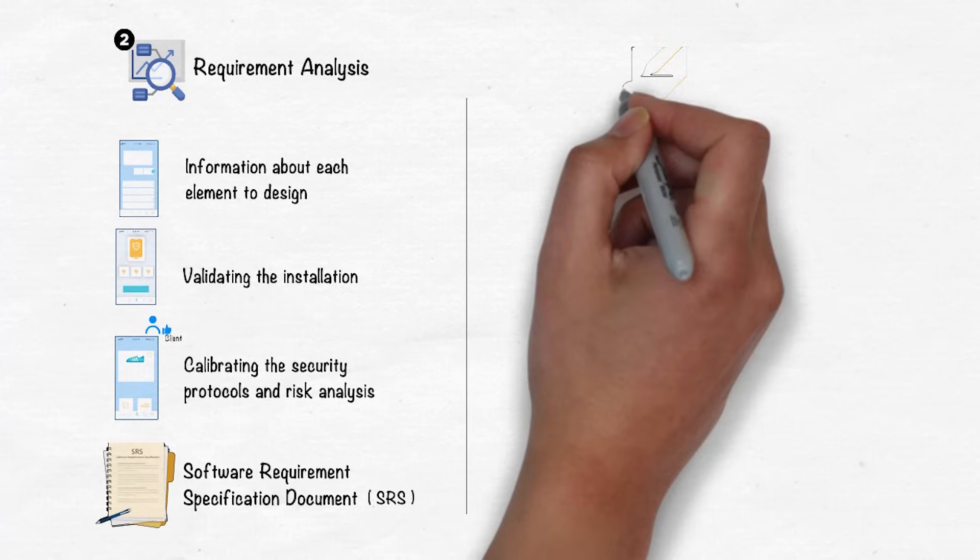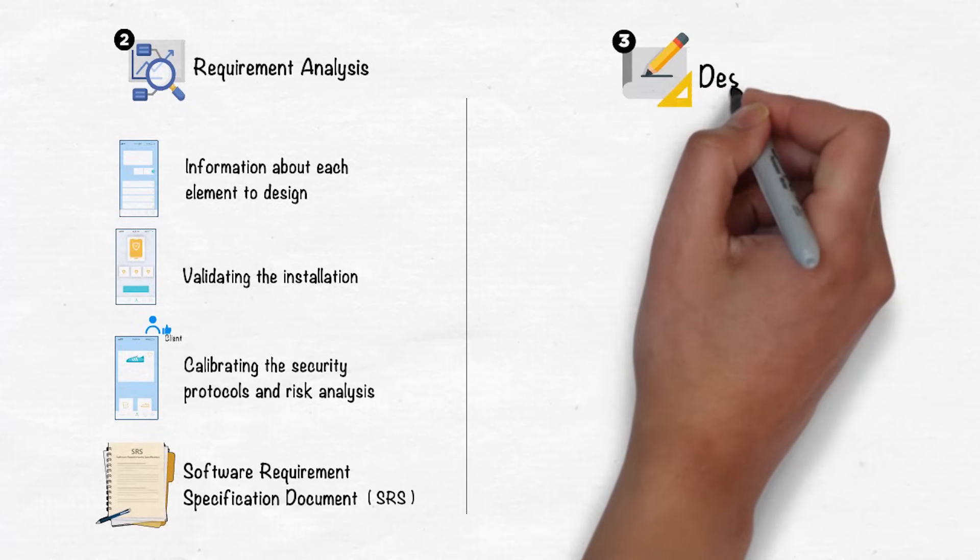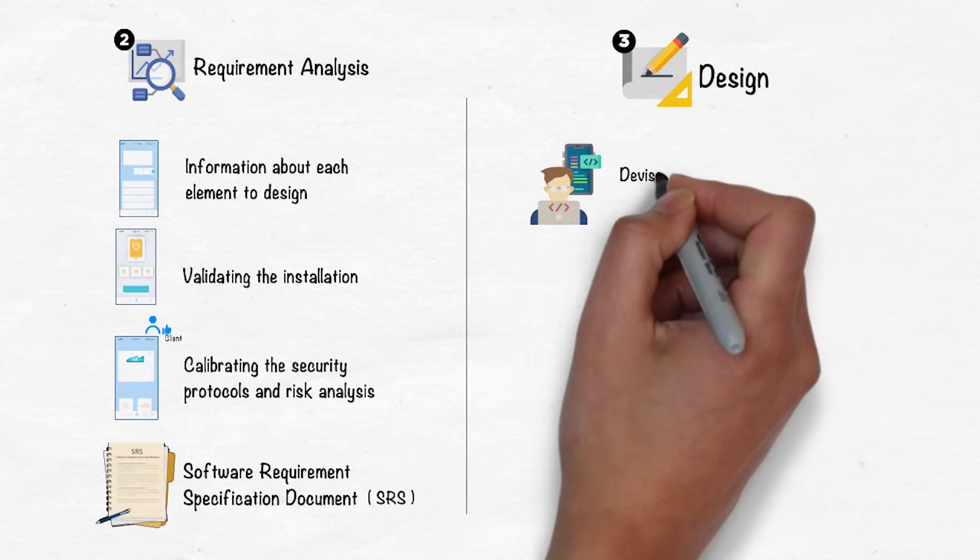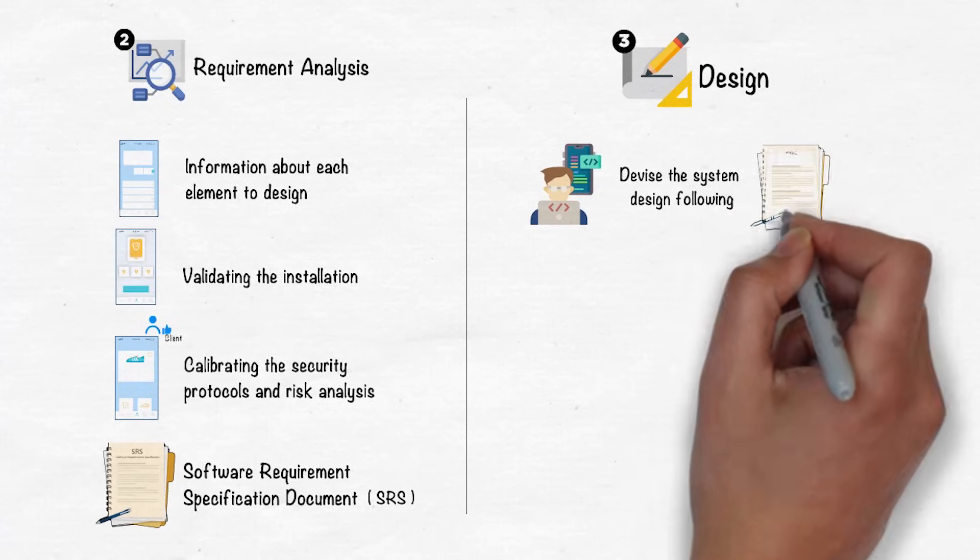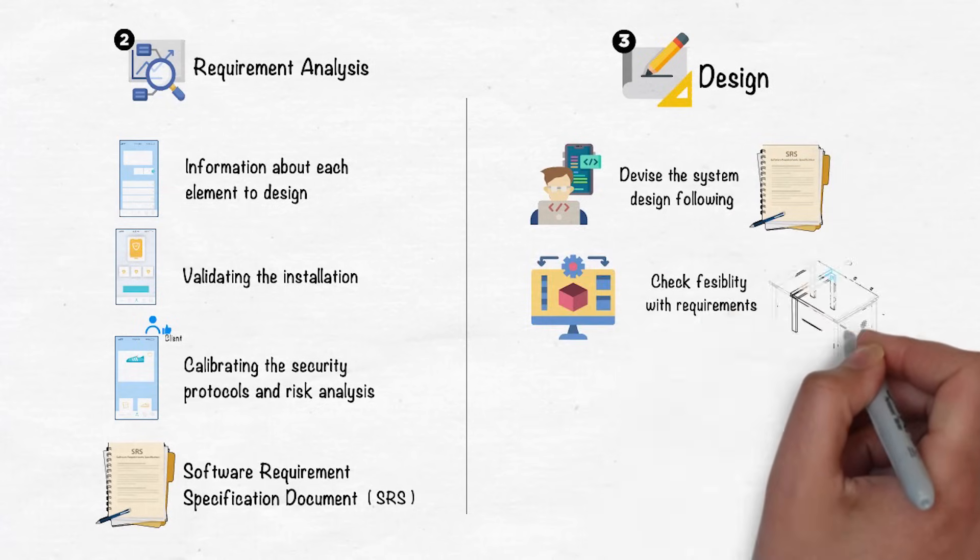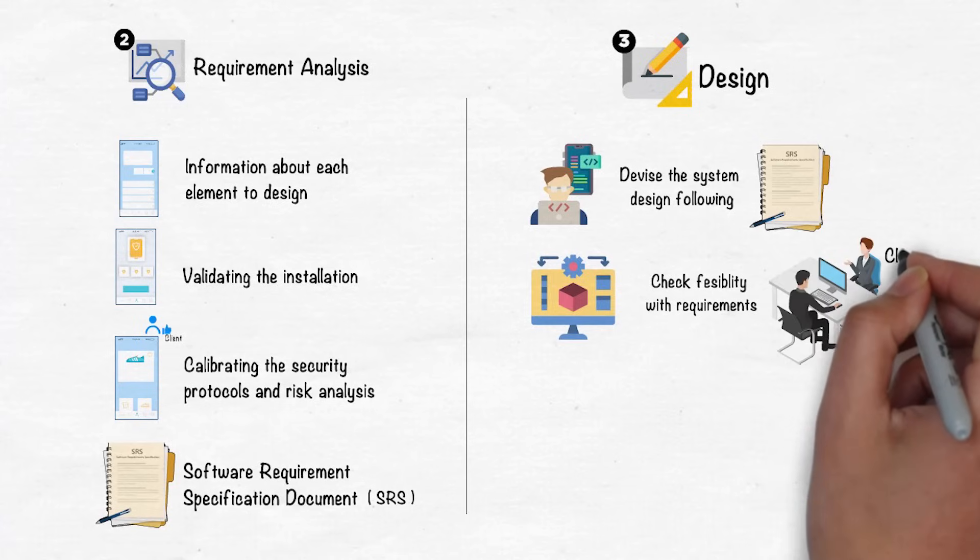After completing the second phase, the third stage of software development is the design phase. The software designers will devise the system design following the SRS document. The system design defines the overall architecture of the software and checks its feasibility with the client's requirements.